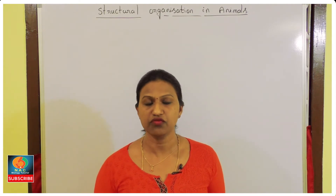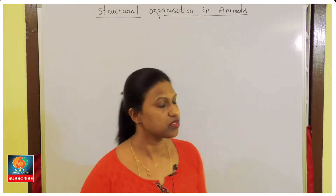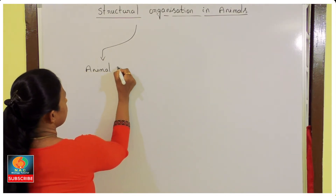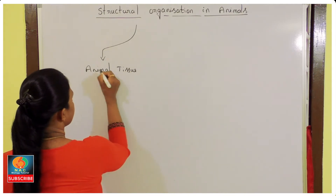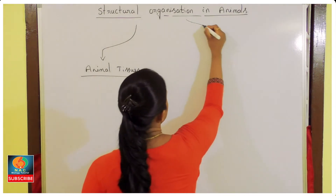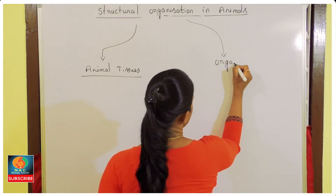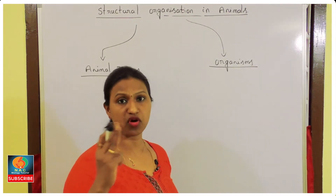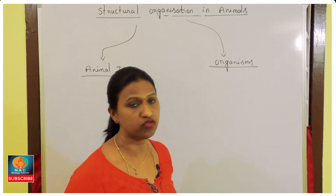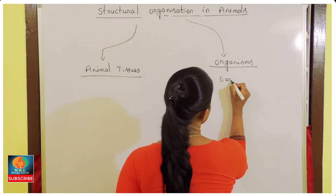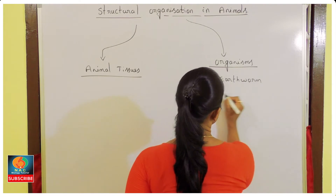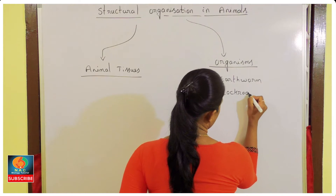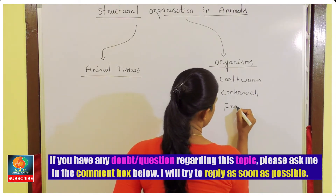So students, basically we have to cover two main topics. One is animal tissues, and in the second part we have to talk about some organisms — mainly three organisms — morphology as well as their anatomy we have to study here. The first one is Earthworm, second is Cockroach, and the third animal is Frog.